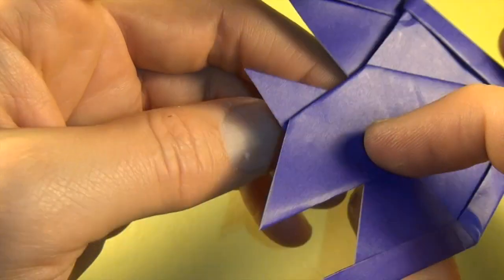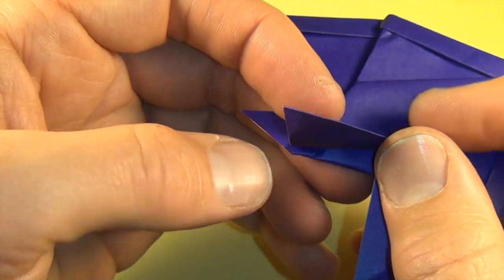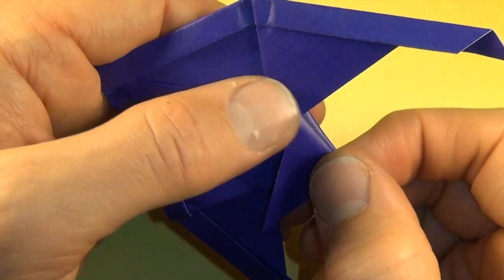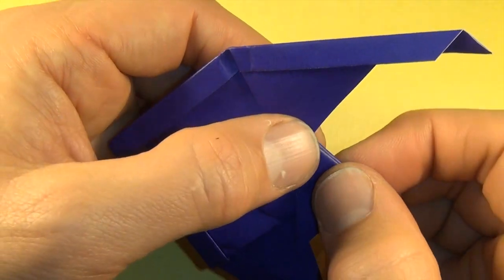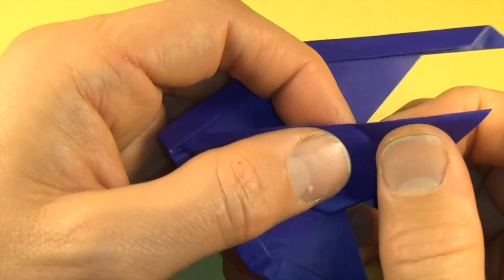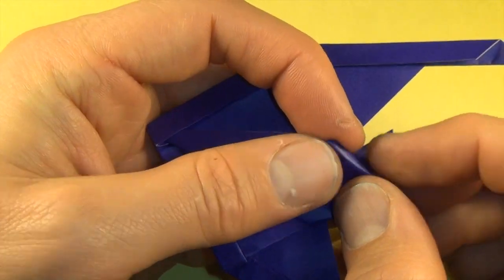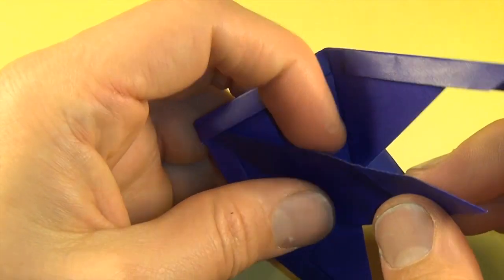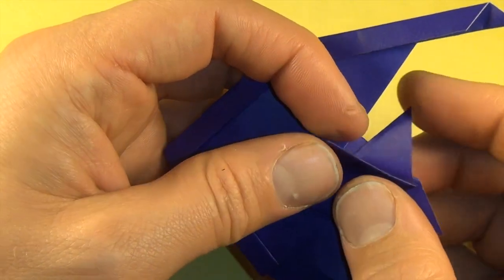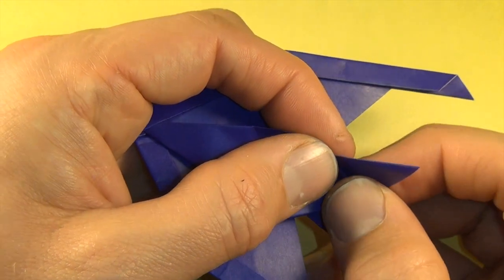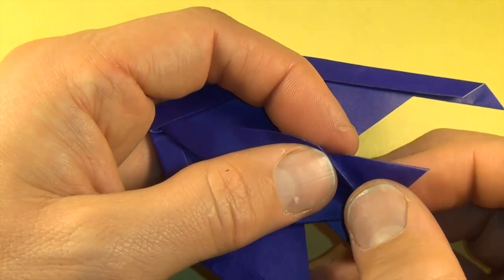And do the same thing on the other side. So we're first going to valley fold, lining up with this edge. We're going to reverse that crease so it's a mountain. And we're going to make a valley fold so that it can turn into a pleat. See the pleats are parallel.